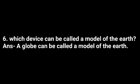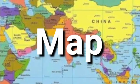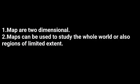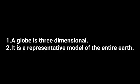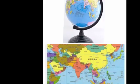Now I will explain. A map is two-dimensional and maps can be used to study the whole world or also a region of limited extent. A globe is three-dimensional and it is a representative model of the entire earth. Now we have to think about what is the meaning of a two-dimensional object and what is the meaning of a three-dimensional object — we are going to learn that in the next video. Thank you.